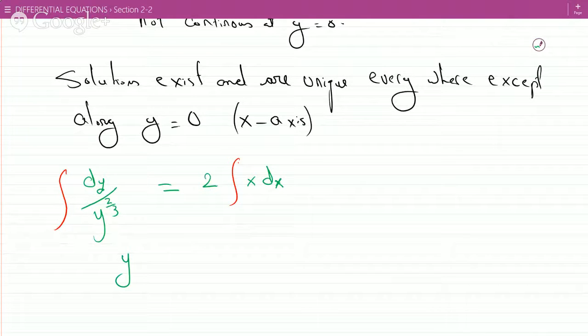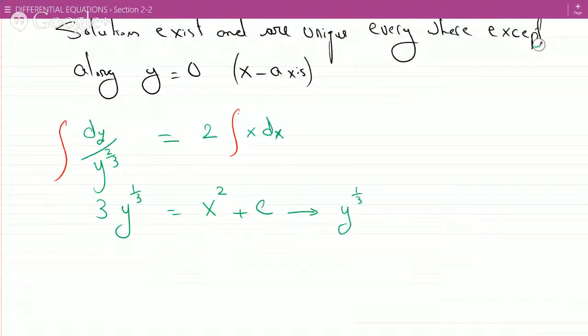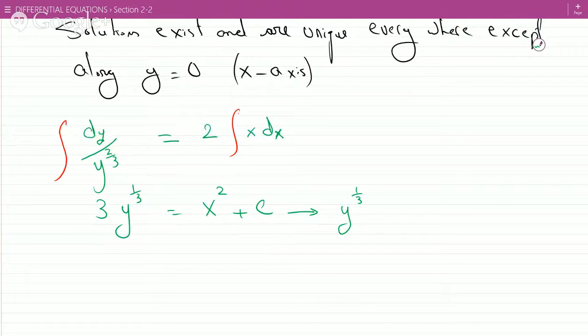Look what happens. You actually have to integrate this. So add one to the minus... You see why it doesn't work when it's derivative at zero? Because now, you know, this is minus two-thirds plus one. Y to the one-third divided by one-third, so multiplied by three, is equal to x squared plus c. So now, divide by three, you'd get y to the one-third equals x squared over three plus some constant c.